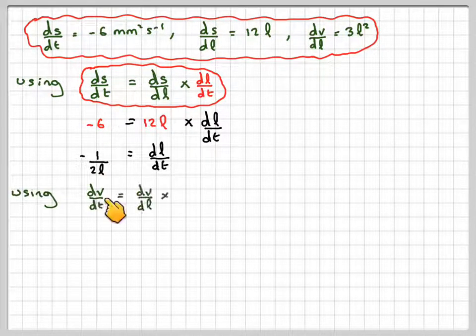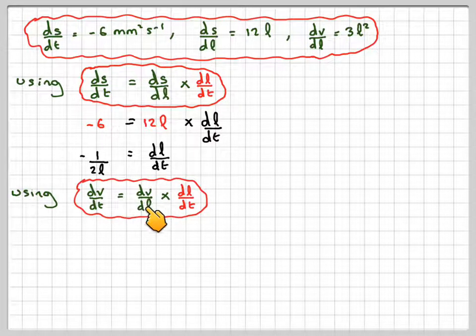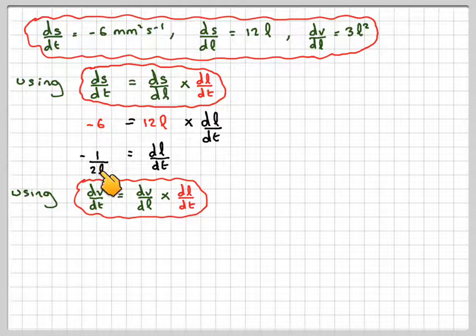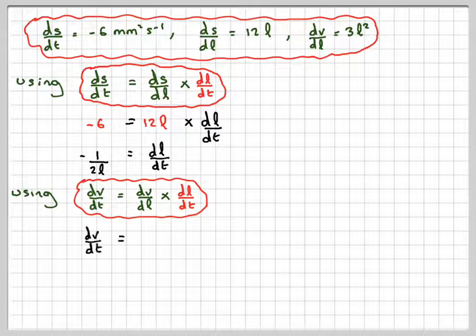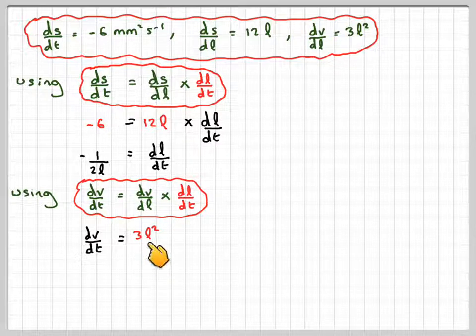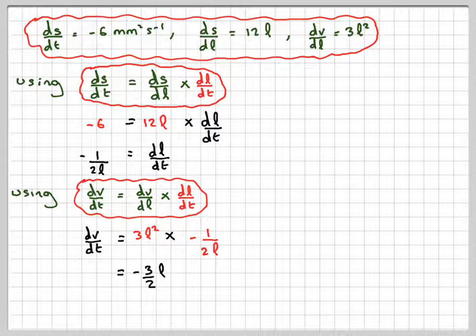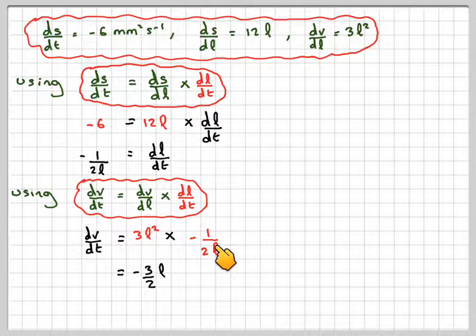And then also using the fact that dv by dt equals dv by dL times dL/dt, and we now know this is minus 1 over 2L, we can say that dv by dt equals 3L² times minus 1 over 2L, which gives me minus 3 over 2L. The L squared and the L will cancel.